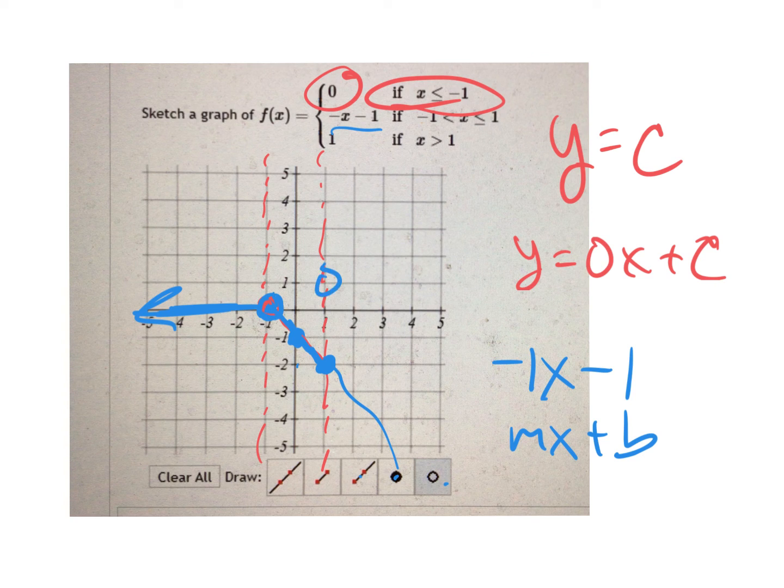And then this is going to be an open circle at when x equals 1, it's y equals 1, and then it's a horizontal line. Okay, does that give you the help you need here? Let me do a little erase so it looks like the right answer.